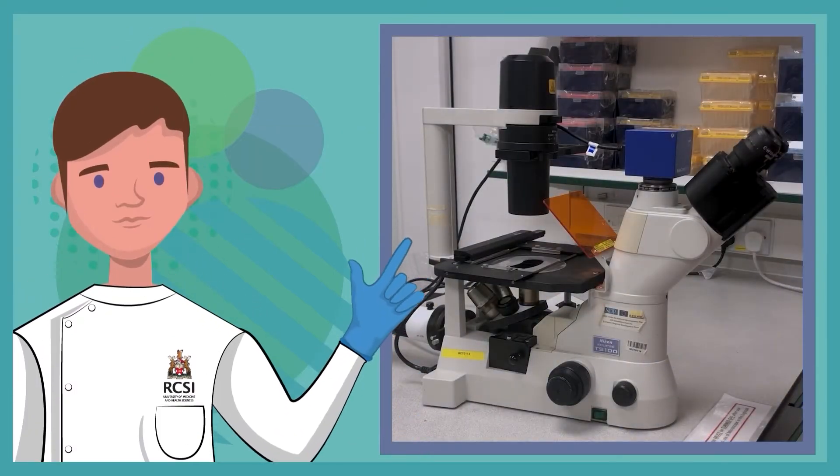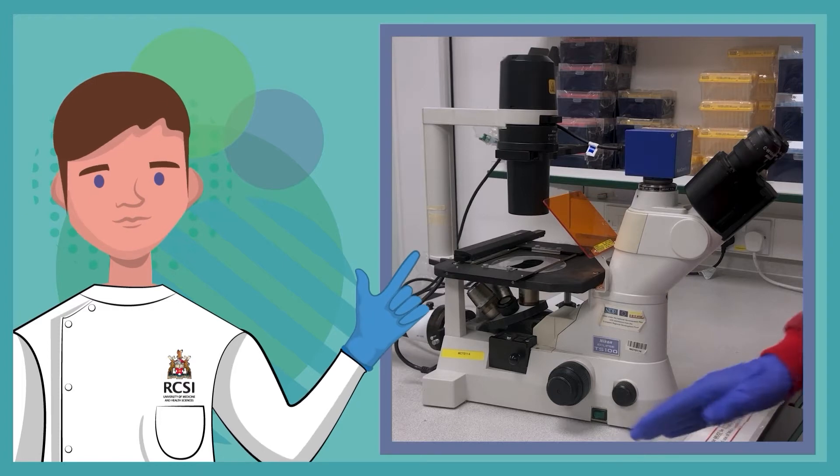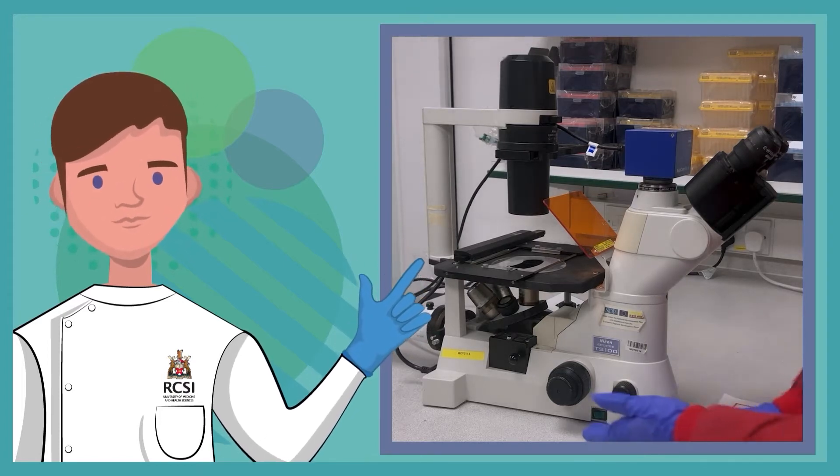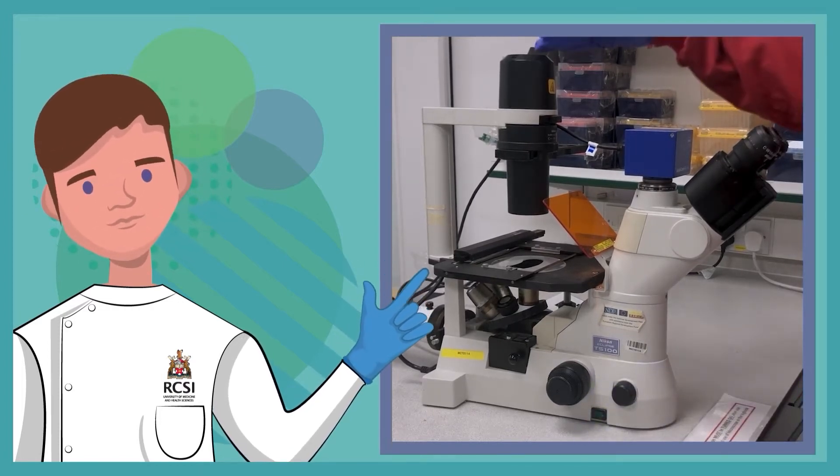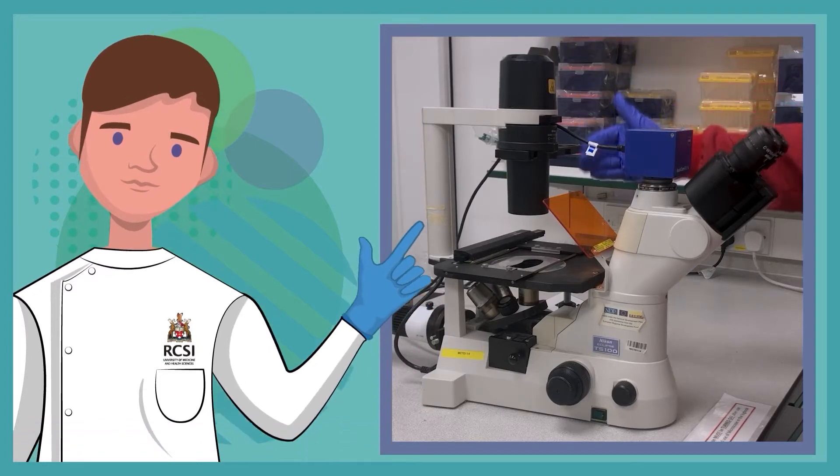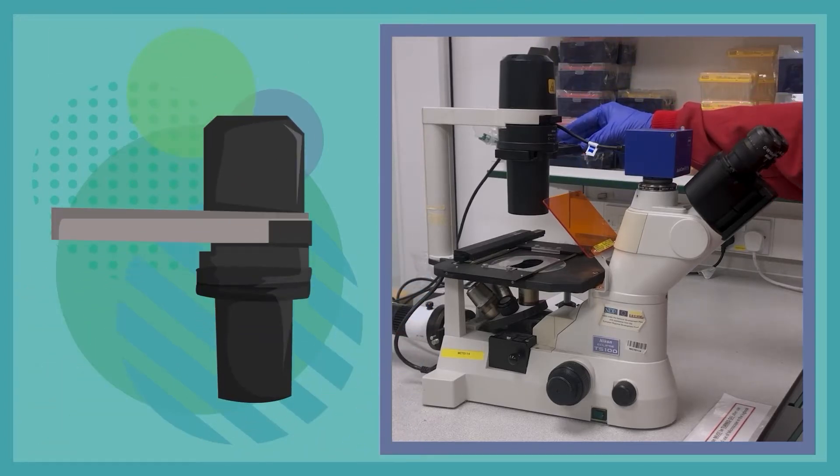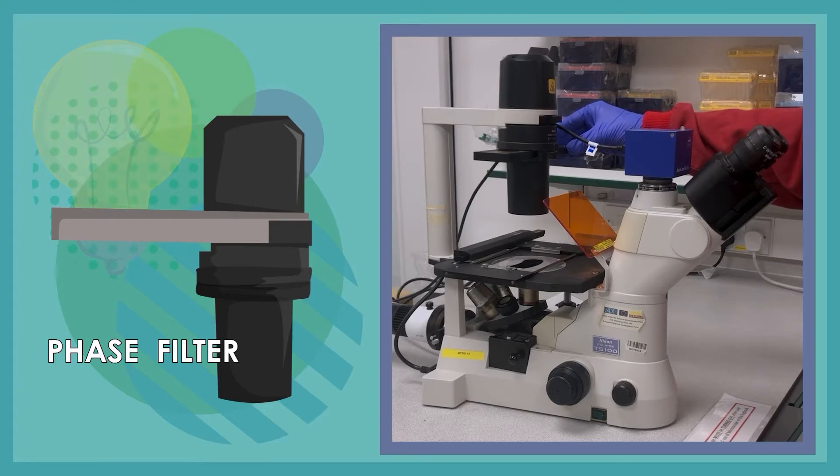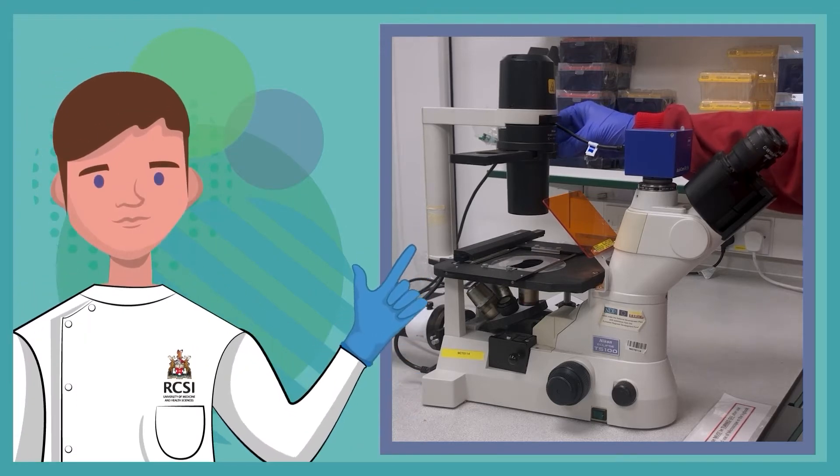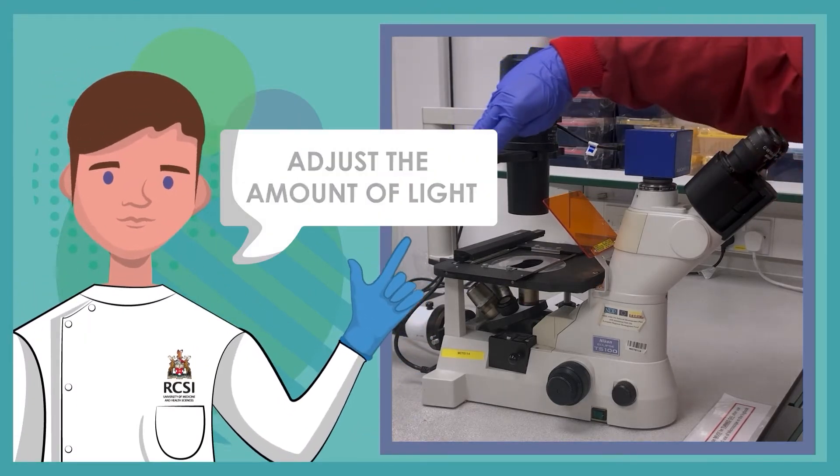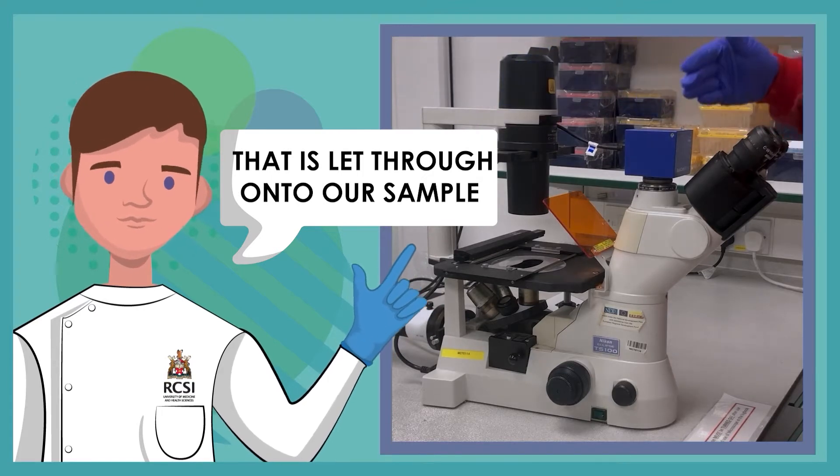So shown here is a standard tissue culture microscope equipped with a camera. There are a series of important parts to identify. Working from top down, we first have the light source which passes down through a phase filter. This filter allows us to adjust the amount of light that is let through onto our sample, adjusting the brightness.